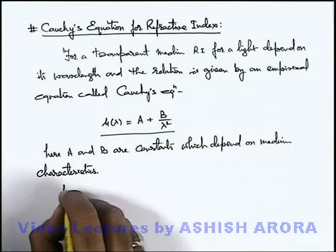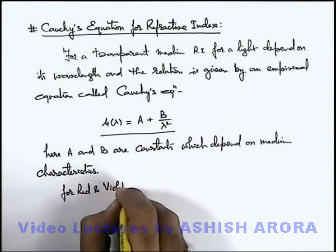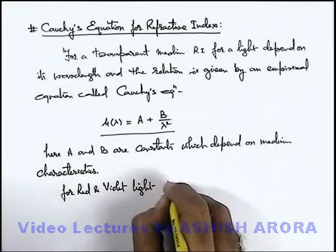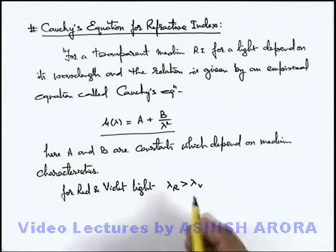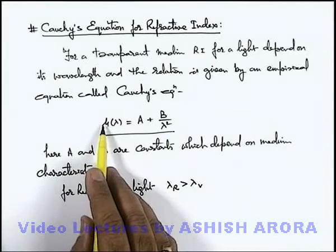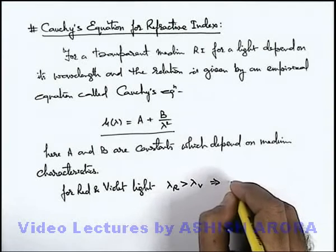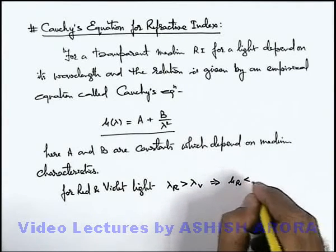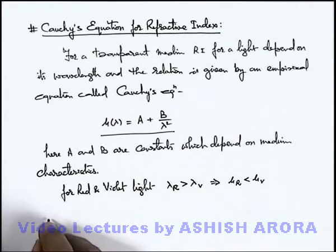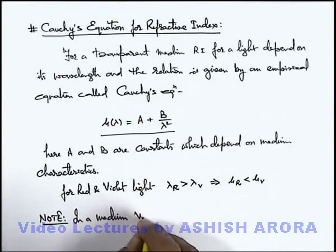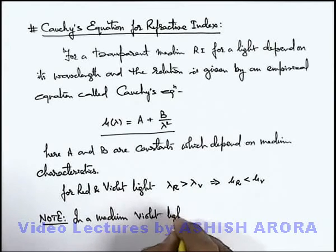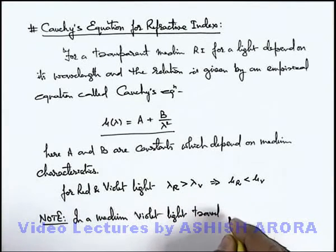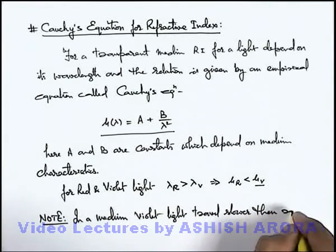Here we can see, for red and violet light: the wavelength of red light is more than that of violet light. So if the wavelength is high, its refractive index will be lower. As lambda of red light is more, the refractive index for red light will be less than the refractive index for violet light for the same medium. That means in a medium, violet light travels slower than red light, because it has a higher refractive index.